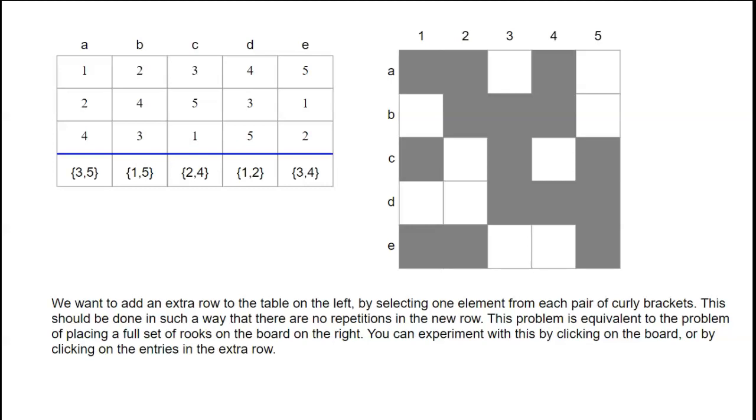Now we're going to look at a Latin square extension problem and explain how to convert it to a rook placement problem. So the idea is we've got this table here, a 3 by 5 table, with numbers 1 to 5 in it, and on each of these first three rows, each number appears precisely once. So there's no clashes in any row.